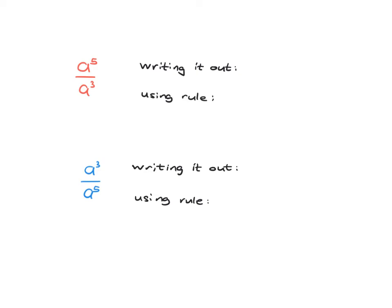We're going to look at negative exponents today, but first we just want to establish where the meaning for negative exponents comes from. So let's have a look at something you're very familiar with: a to the 5 over a cubed.